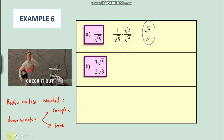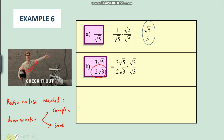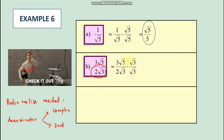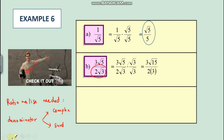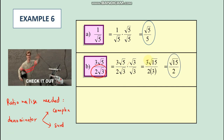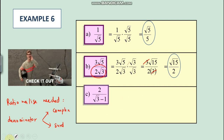What happens if you have 1/(2√3)? You multiply by √3/√3. The 2 in front can be kept; it will be taken care of anyway. The answer can be simplified further because you can cross out a factor of 3, giving you a simplified result.